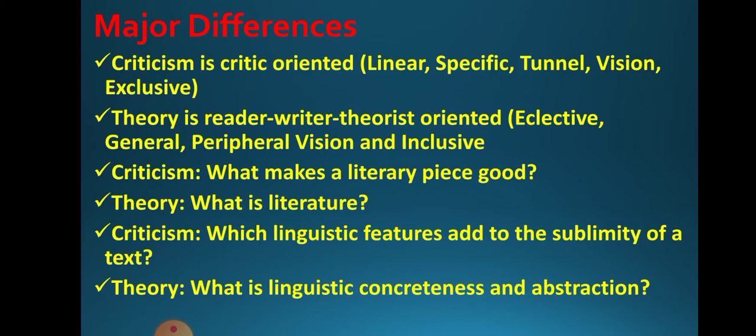The major differences: criticism is critically oriented, linear, specific, with an internal vision, and exclusive. Theory is reader-, writer-, and theorist-oriented, eclectic, general, with a peripheral vision, and inclusive. Criticism asks what makes a literary piece good; theory asks what literature is and what linguistic concreteness and abstraction mean.